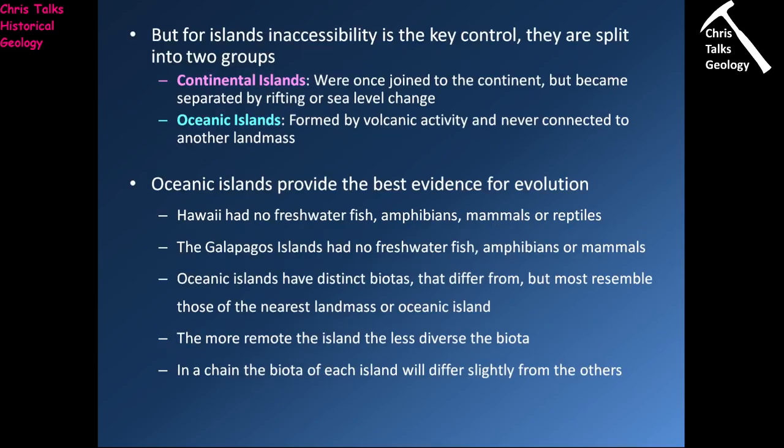For islands, inaccessibility is the key control. Islands are primarily split into two groups: continental islands, which were once joined to the continent but became separated by rifting or sea level change — examples include Madagascar or the United Kingdom — and oceanic islands, which are formed by volcanic activity and were never connected to another landmass, such as the Galapagos Islands or Hawaii.